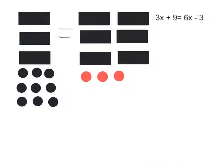In this example it's a little different because I have 3x plus 9 on the left. On the right I have 6x minus 3, which is the same as plus negative 3. That's why I have red circles on the right — they represent 3 negatives. I'll start by taking away the extra x's on the left so that I only have x's on one side.